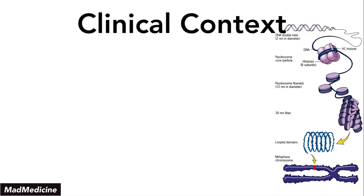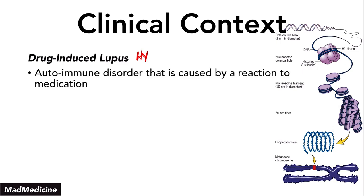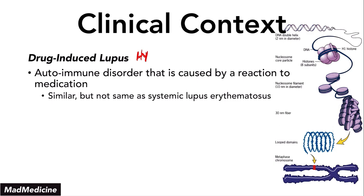Why is all of this important? Because there are some clinical correlations you need to know. The first one is drug-induced lupus — a very high-yield concept. Drug-induced lupus is an autoimmune disorder caused by a reaction to medication. It is very similar to systemic lupus erythematosus, except it is not exactly the same. Normal SLE is usually autoimmune mediated; drug-induced lupus is caused by a medication that leads to an autoimmune pathway. The insulting culprit is the medication itself. If you take away the medication, the drug-induced lupus can often go away or be treated more easily — it's much easier to manage than SLE.